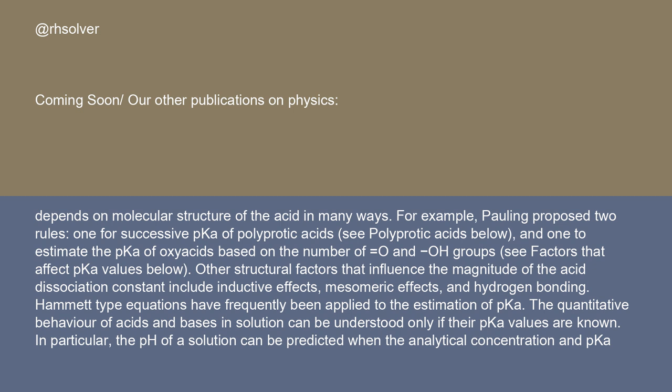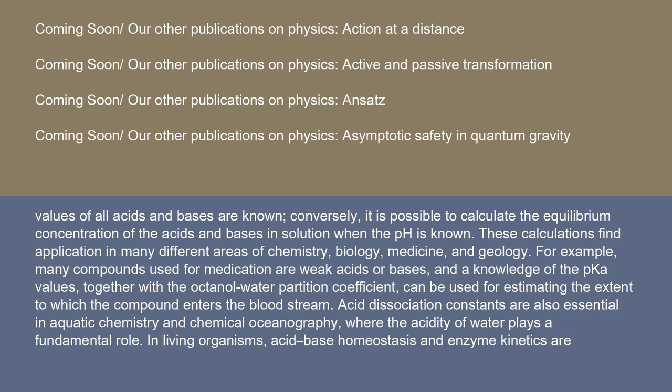Hammett-type equations have frequently been applied to the estimation of pKa. The quantitative behavior of acids and bases in solution can be understood only if their pKa values are known. In particular, the pH of a solution can be predicted when the analytical concentration and pKa values of all acids and bases are known. Conversely, it is possible to calculate the equilibrium concentration of the acids and bases in solution when the pH is known.